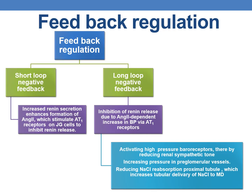Coming to feedback regulation: renin is subject to two types of feedback regulation — short-loop and long-loop negative feedback. In short-loop negative feedback, increased renin secretion enhances formation of angiotensin 2, which stimulates AT1 receptors on JG cells and inhibits renin release.